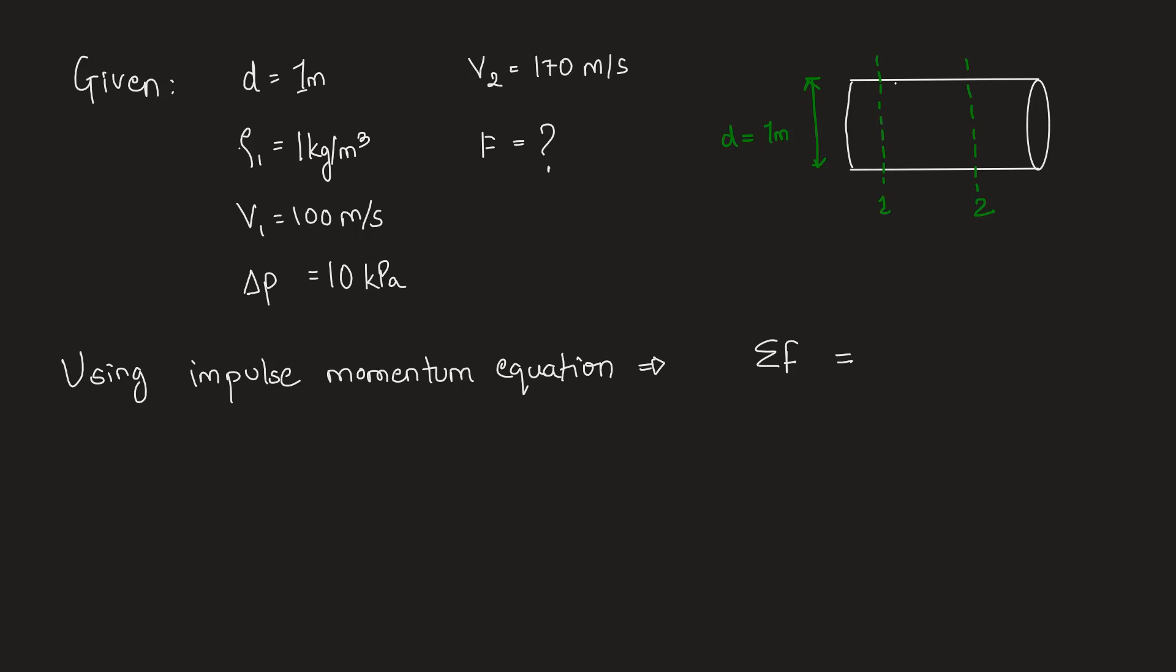So, at the entry of the control volume will be the initial linear momentum while at the exit it will be the final. So, we need to write M dot V2. We are not only taking the linear momentum but we are taking the rate of change of linear momentum.